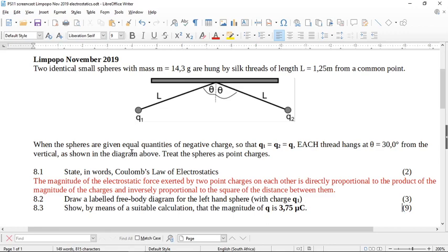Draw a labeled free body diagram for the left-hand sphere with charge Q1. So this is not normally where you have to draw free body diagrams, but it's really not that hard to do. You just have to think about it. First of all, it's three marks, so you know you need three arrows. Okay, so if you look at Q1, Q1 has got a mass m.